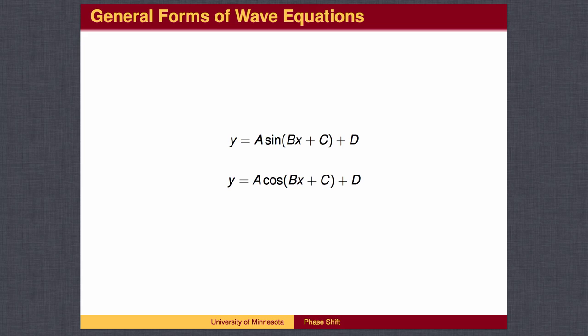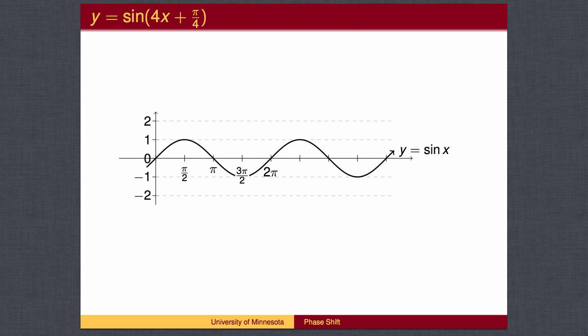The other addition we need to be concerned with is the constant c added inside the parentheses to the angle. Constants added inside the parentheses will shift the graph left and right. For sine and cosine waves, this shift is called the phase shift. In this example, we have a sine wave whose frequency is 4 times that of a standard sine wave, and the pi over 4 will shift the graph horizontally.